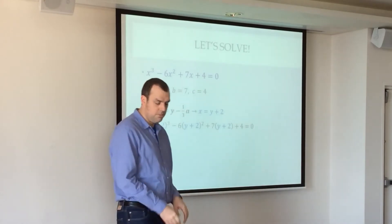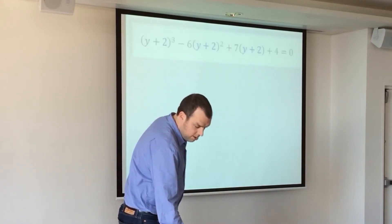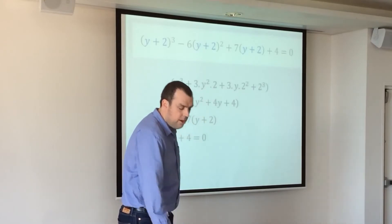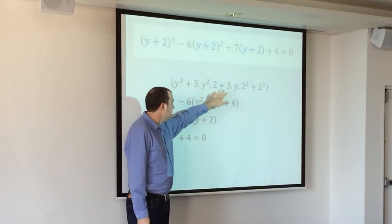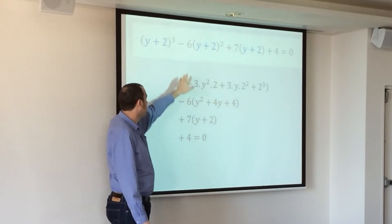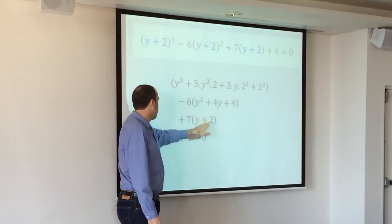which doesn't look like much of an improvement. Okay, now to solve that, well obviously we've got some expanding to do. The cubic one gets the binomial theorem treatment. Perfect square there. Basic, basic.